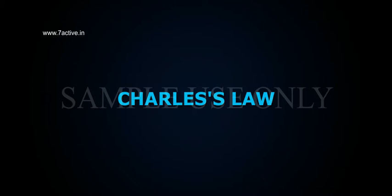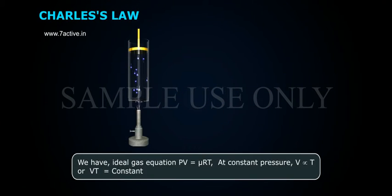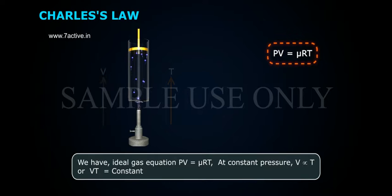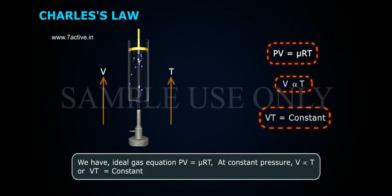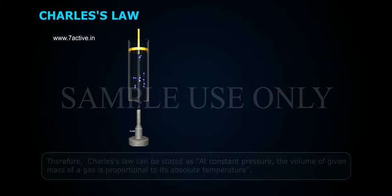Charles's Law. We have ideal gas equation, PV is equal to μRT. At constant pressure, V is directly proportional to T, or V/T is equal to constant.